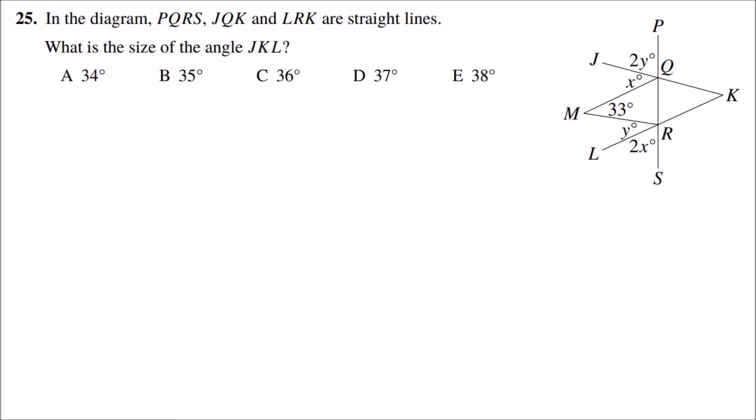Hello, today I'm going to be explaining question 25 from the UKMT junior math challenge 2020. To solve this you need to know the angles on a straight line sum to 180 degrees and the angles in a triangle also sum to 180 degrees.